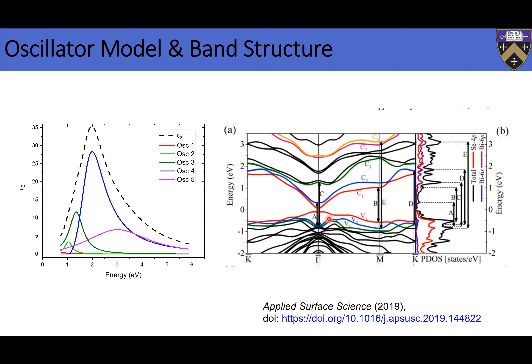I just wanted to give a feel for the problem. The ellipsometry measures the joint density of states, if you like. By getting the dielectric functions and further analyzing them, one gets insights into the band structure. You can then use that to either verify or refute DFT calculations. That's an important function of ellipsometry.